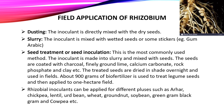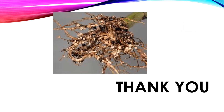Rhizobium inoculants can be applied for different pulses such as arhar, chickpea, lentil, oat bean, wheat, groundnuts, soybean, green gram, black gram, and cowpea. Thank you for your patience in listening — hope you have gained some knowledge regarding Rhizobium biofertilizer.